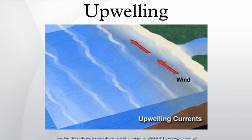The California Current system is an eastern boundary current of the North Pacific that is also characterized by a north and south split. The split in this system occurs at Point Conception, California, due to weak upwelling in the south and strong upwelling in the north. The Canary Current is an eastern boundary current of the North Atlantic gyre and is also separated due to the presence of the Canary Islands. Finally, the Humboldt Current or the Peru Current flows west along the coast of South America from Peru to Chile and extends up to 1,000 km offshore. These four eastern boundary currents comprise the majority of coastal upwelling zones in the oceans.